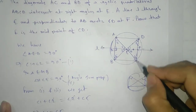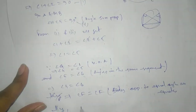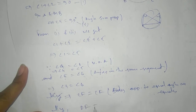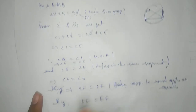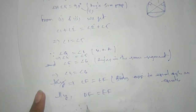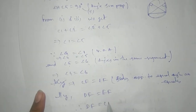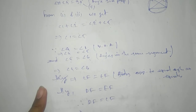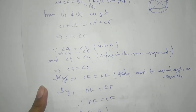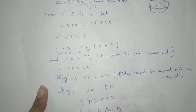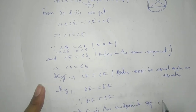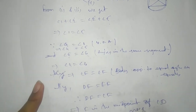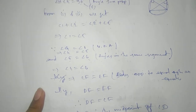Similarly, EF equals DF. Therefore DF equals CF, which implies F is the midpoint of CD. Proved. Thank you.